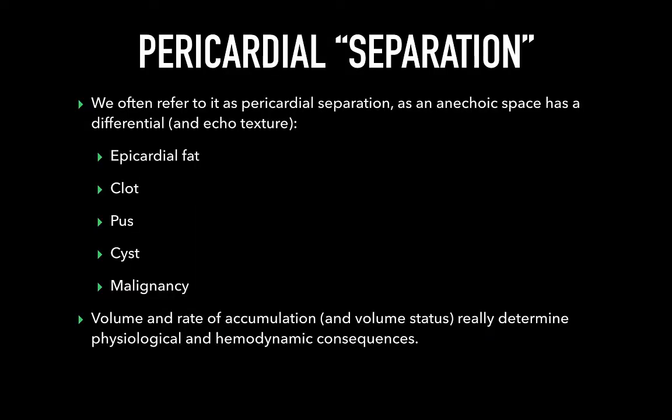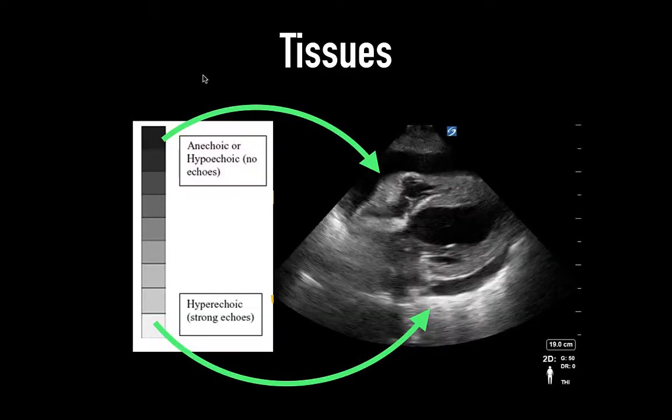There's a differential for any accumulation of fluid or tissue around the heart, including epicardial fat, clot, pus, cysts, and malignancy. These different etiologies will demonstrate variable echo texture or pattern distribution around the heart. In general, the heart moves within a fluid-filled pericardium, pushing the fluid or material around, while tissues often move in concert with the heart as they are attached to either the pericardium or the heart itself.